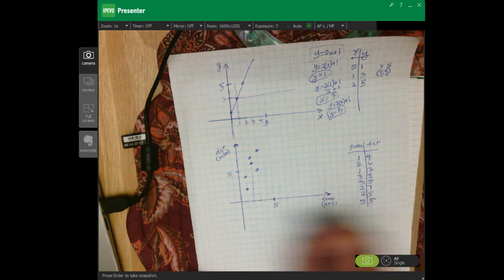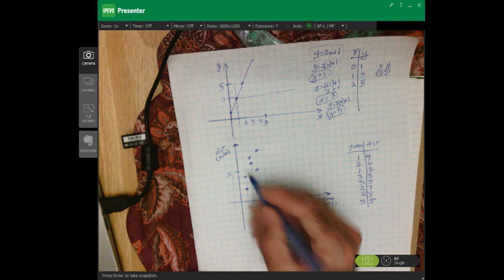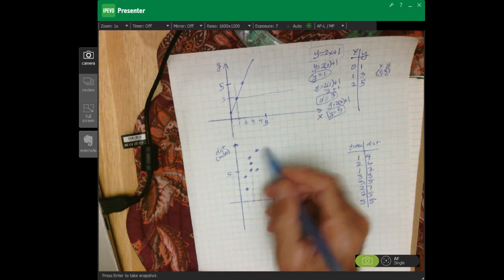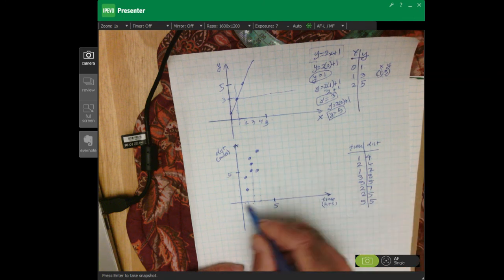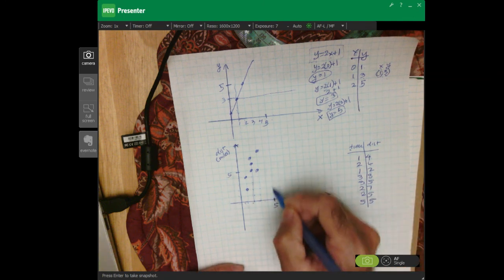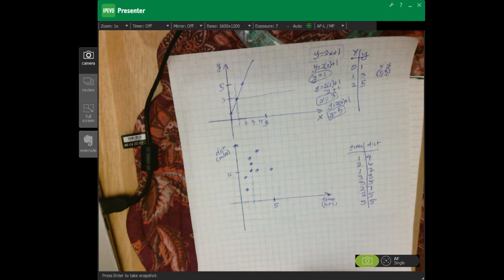And what you end up with, as you can see, is a bunch of points. And they're all scattered around. And that's why it's called a scatter plot. So we're five. Up five.